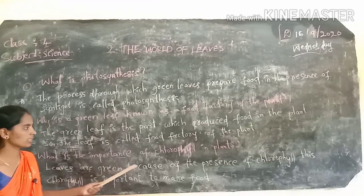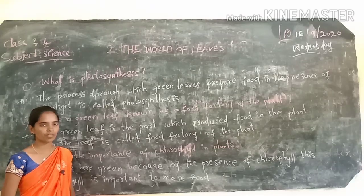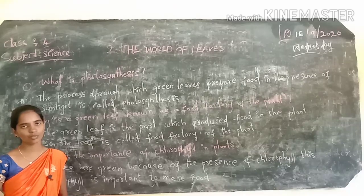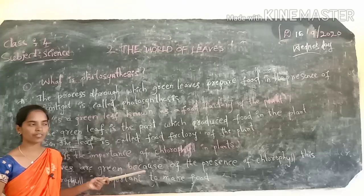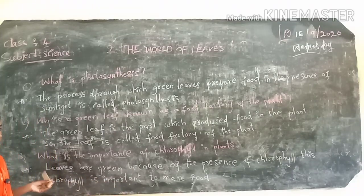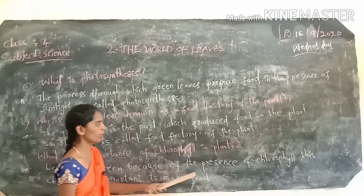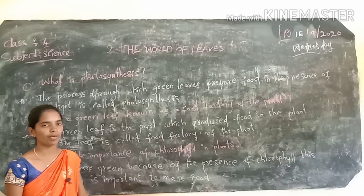Third question: What is the importance of chlorophyll in plants? Leaves are green because of the presence of chlorophyll. This chlorophyll is important to make food.